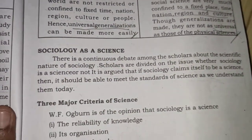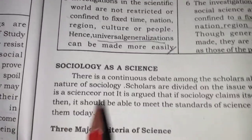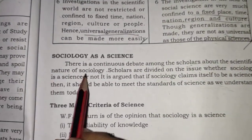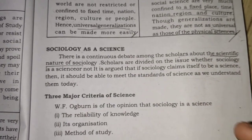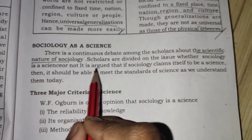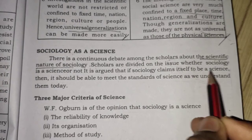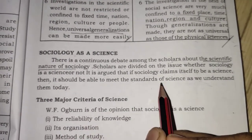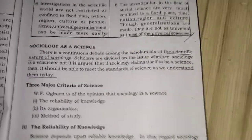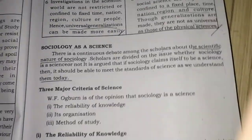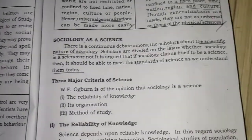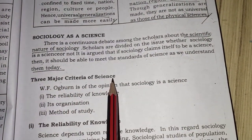In the last class we had seen the nature of science. Now moving on to sociology as science, there is a continuous debate among scholars about the scientific nature of sociology. Scholars are divided on the issue of whether sociology is a science or not. It is argued that if sociology claims itself to be science, it should be able to meet the standards of science as we understand them today, including experiments and scientific criteria.